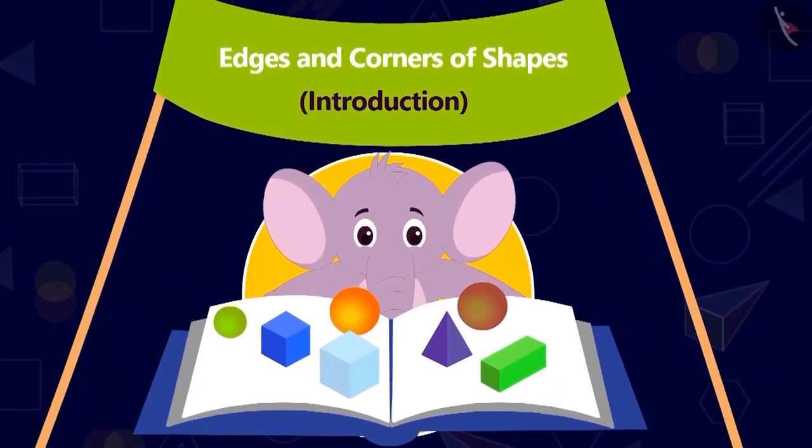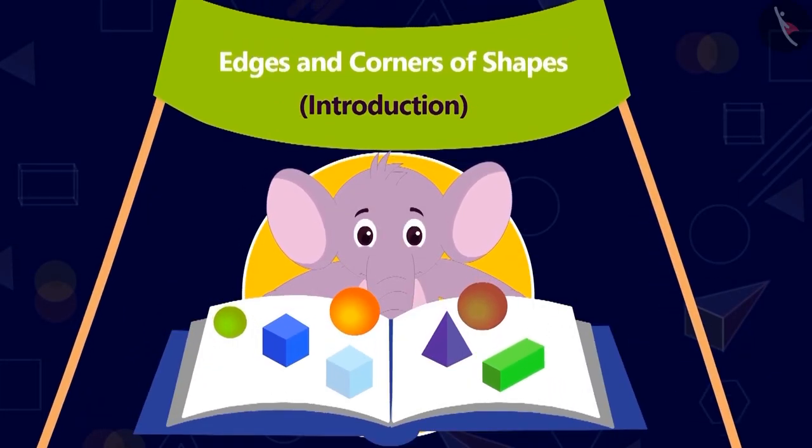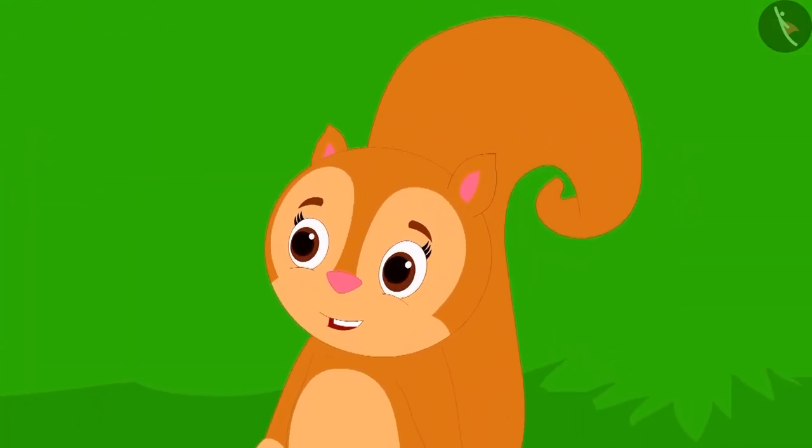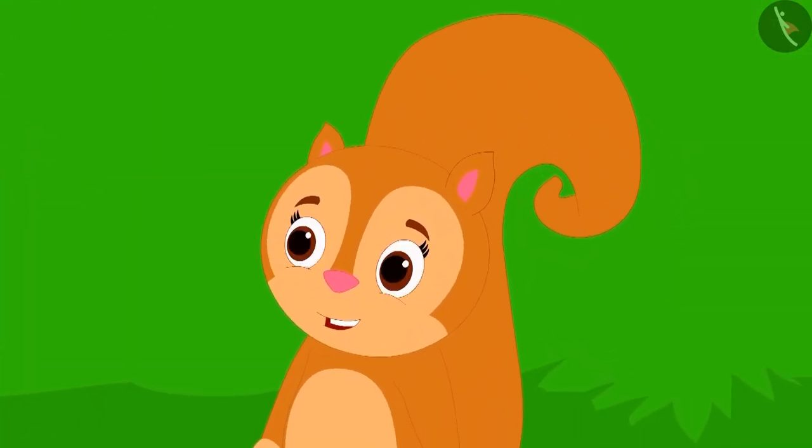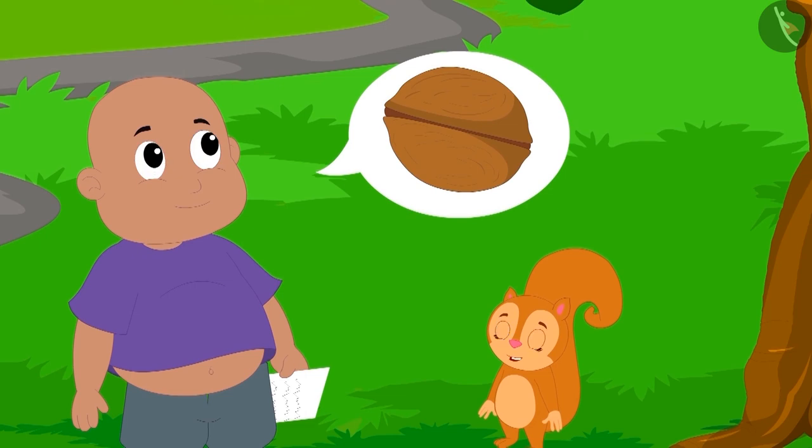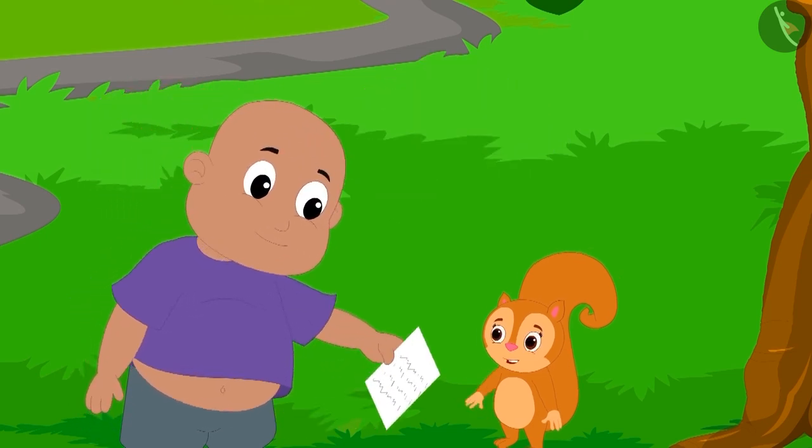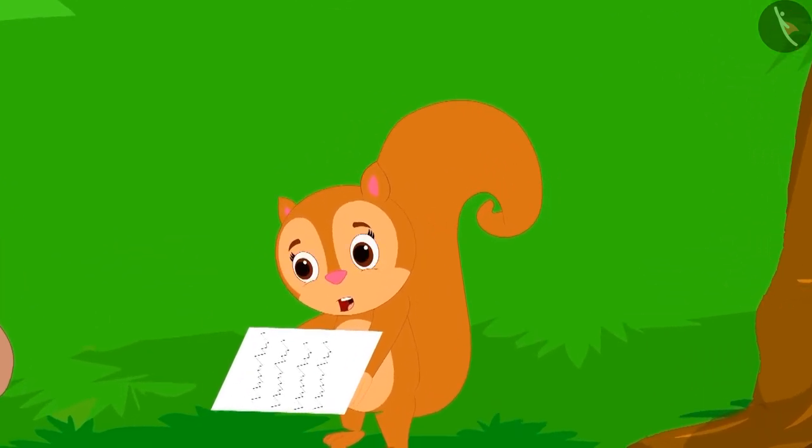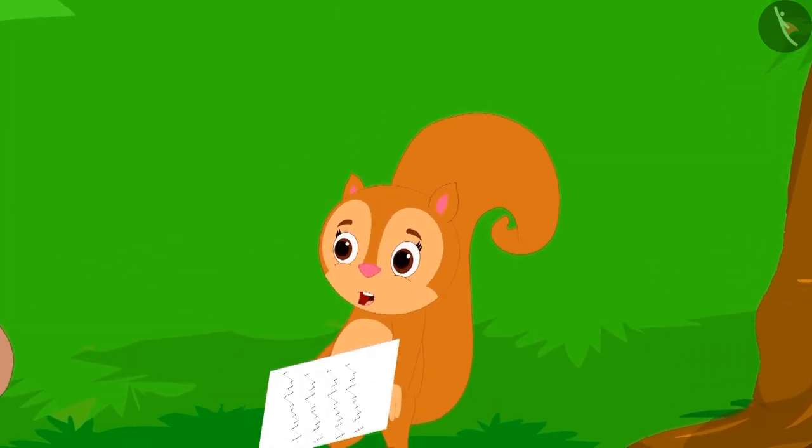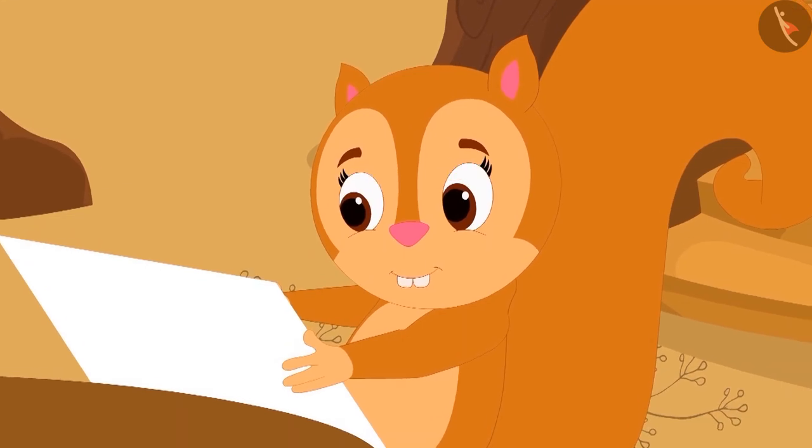Today, we will understand the edges and corners of shapes. Bablu had hidden Chanda's most loved big walnut and Chanda had been given instructions in the letter to look for the walnut. Chanda read the letter.